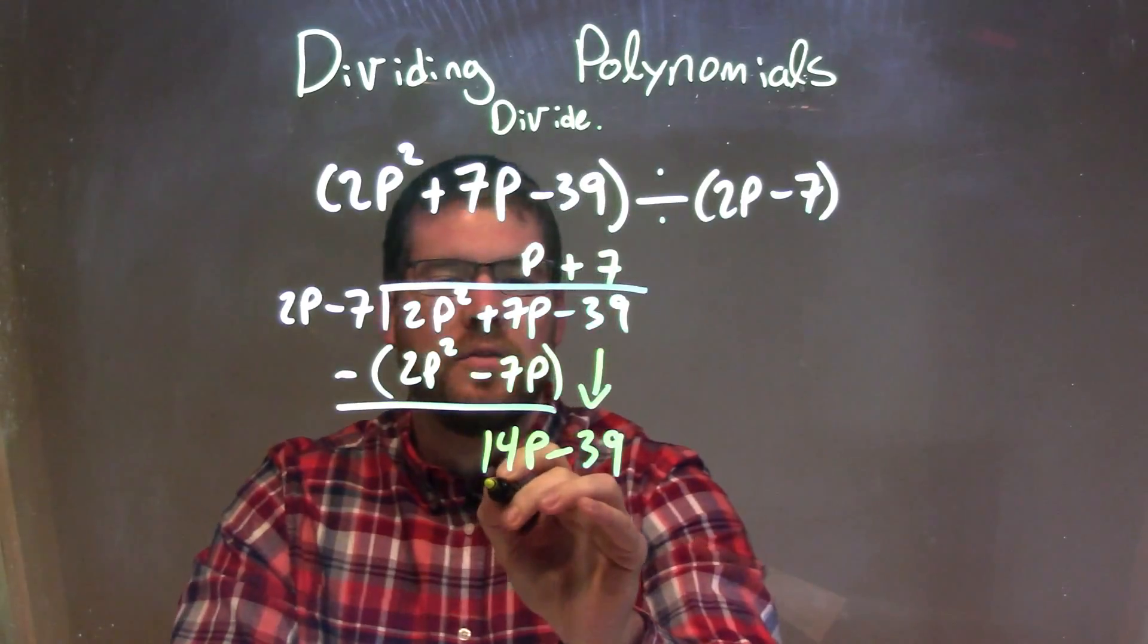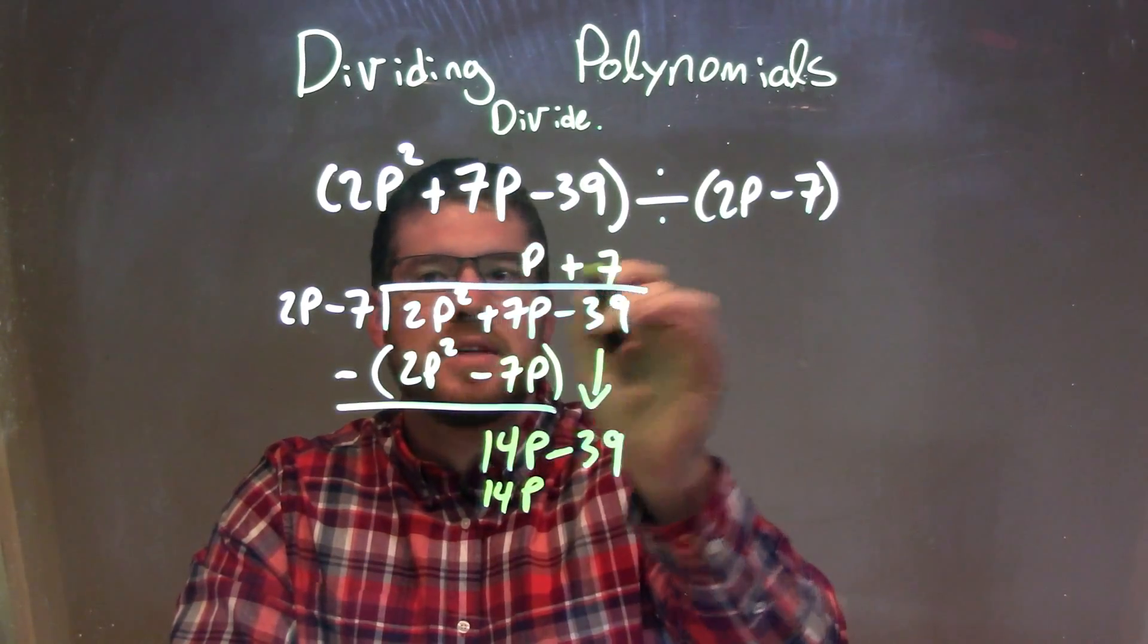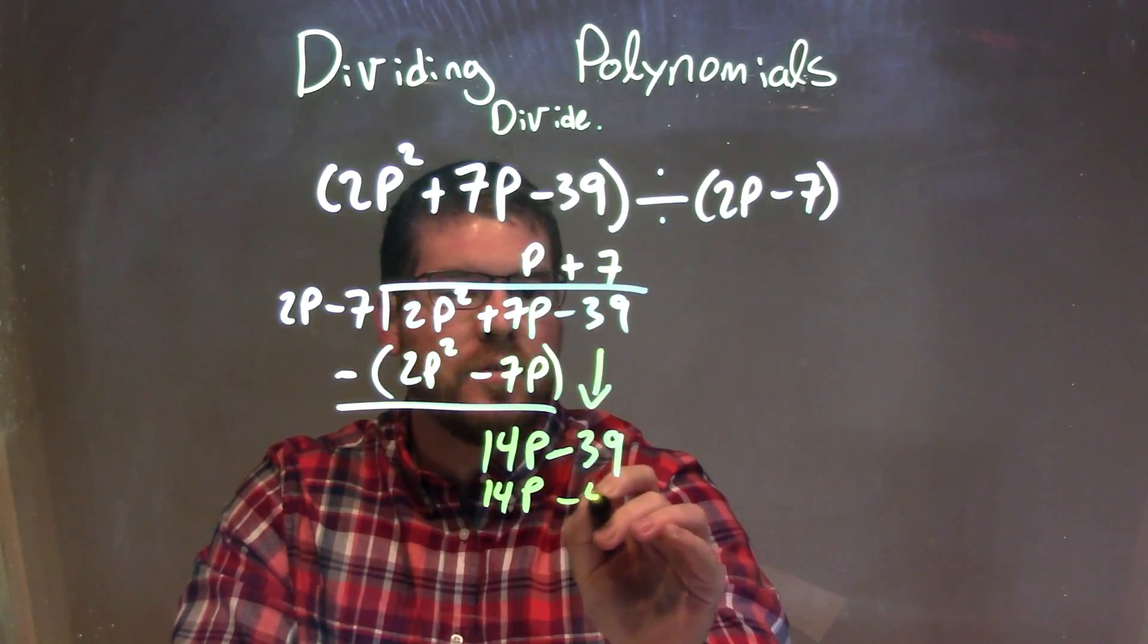7 times 2p is 14p. 7 times minus 7 is minus 49.